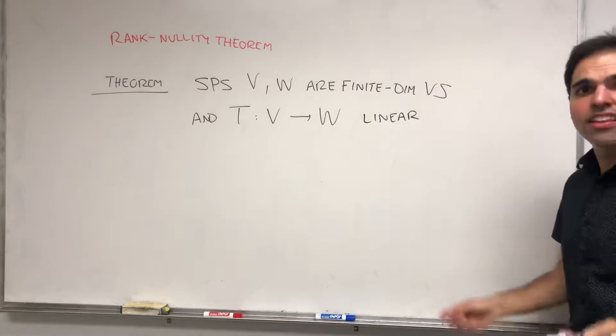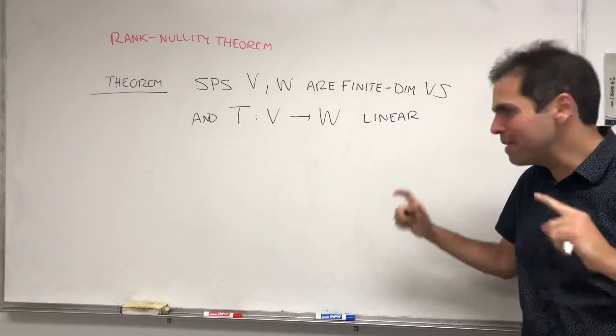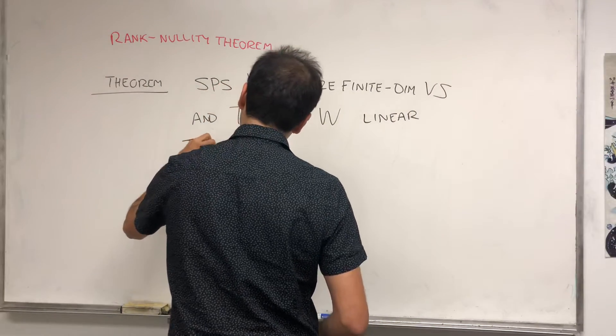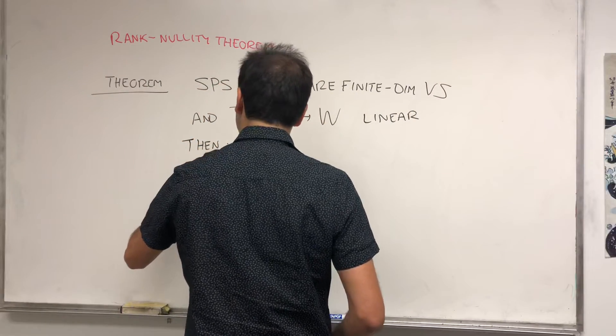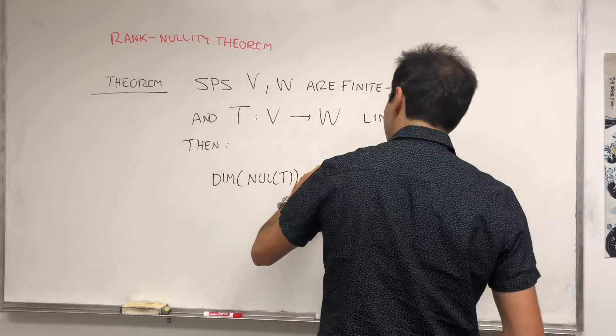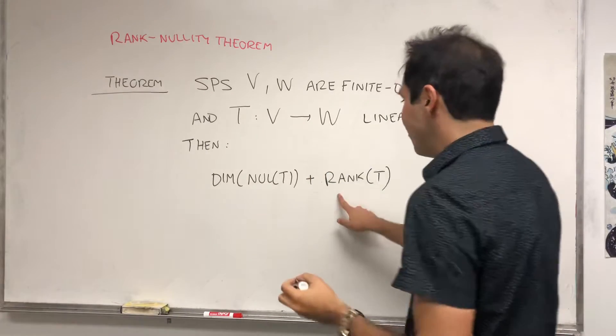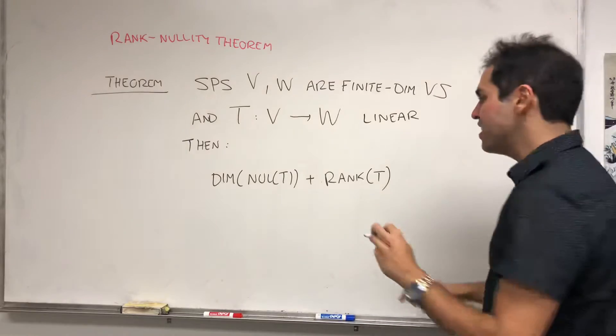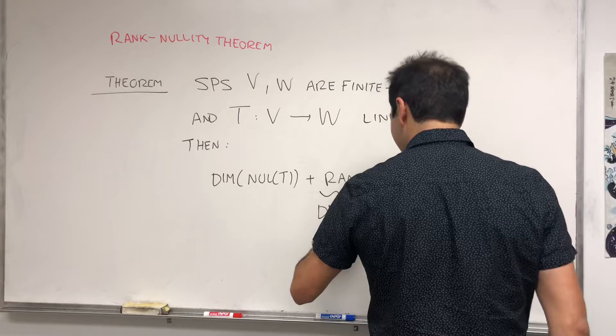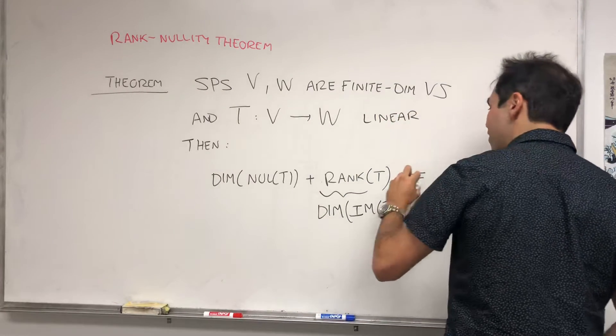Then it turns out the rank of T and the dimension of the null space are related. Then you have the following: if you add the dimension of the null space of T and the rank of T, which by definition is the dimension of the image of T, you actually get the dimension of your input space.